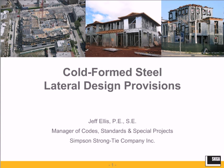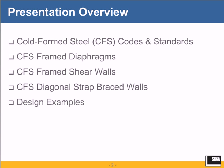Let's begin with a quick overview of the presentation. I'm going to start out with some of the references, codes, and standards that we should all have in our library as we're doing cold-formed steel design. Then I'll discuss cold-formed steel framed diaphragms, cold-formed steel framed shear walls, cold-formed steel diagonal strap braced walls, and then go over a few design examples at the end of the webinar.